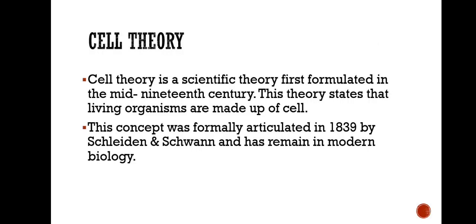Cell theory in biology is a scientific theory first formulated in the mid-19th century. This theory states that living organisms are made up of cells. This concept was formally articulated in 1839 by Schleiden and Schwann and remains in modern biology.